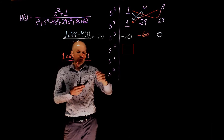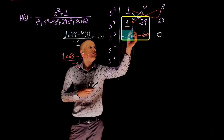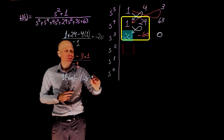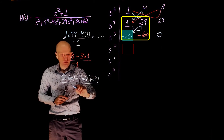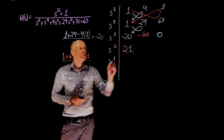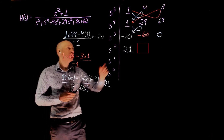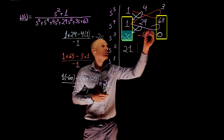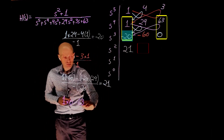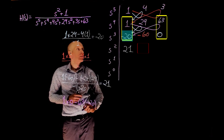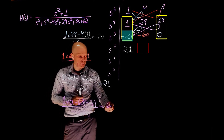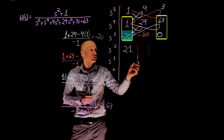Moving to the next row: taking these four numbers, we compute 1 times negative 60, minus negative 20 times 24, divided by negative negative 20 — this is positive 21. For the element next to 21, we expand the matrix to the right: 1 times 0, minus 63 times negative 20, divided by negative negative 20 — this is 63. Note again that when there is a 0 in one position, the number just above it appears here. The next element is 0.